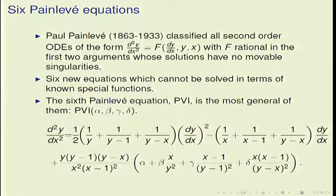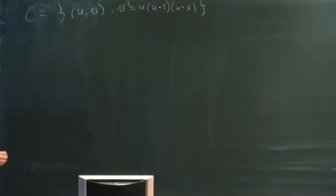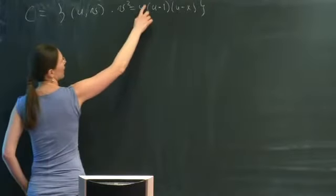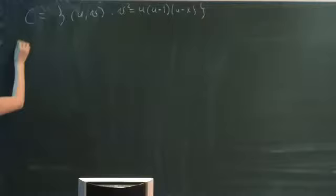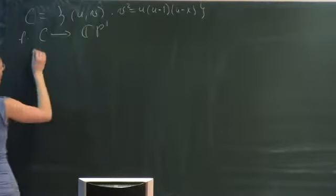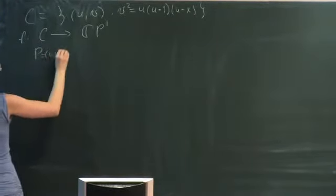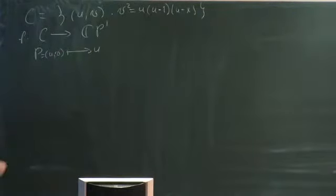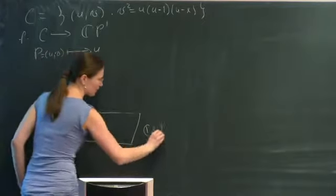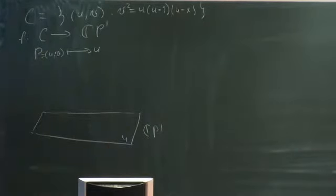An elliptic curve is an algebraic curve with a set of points with two coordinates, such that these two coordinates are related by this equation. I like to think about the elliptic curve as a two-sheeted ramified covering of the complex plane — actually the Riemann sphere — where the coordinate u lives.